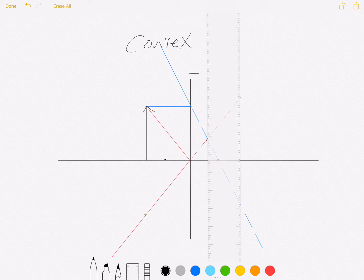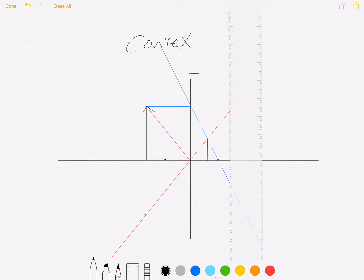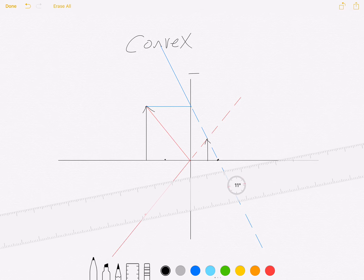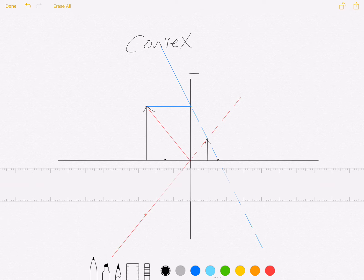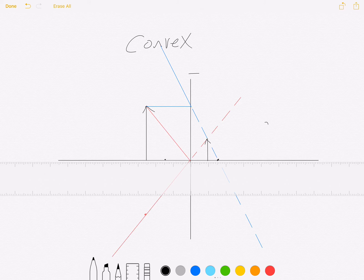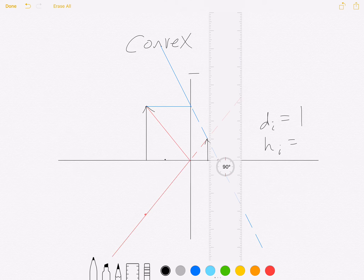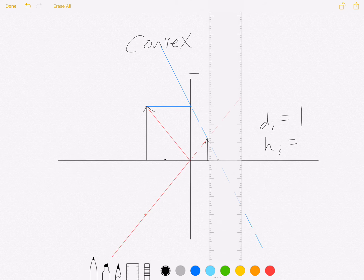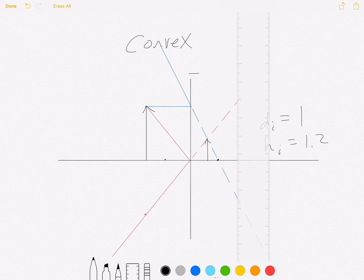There we are. So our image distance is right at around one unit, just shy, and our image height is 1.2 units. So we have those all right.